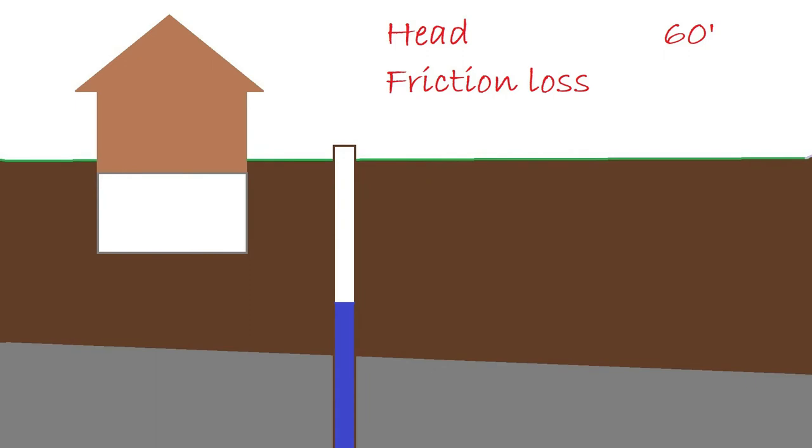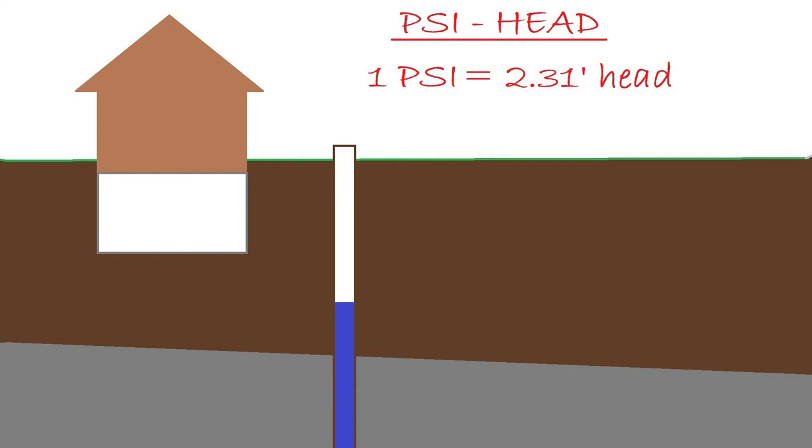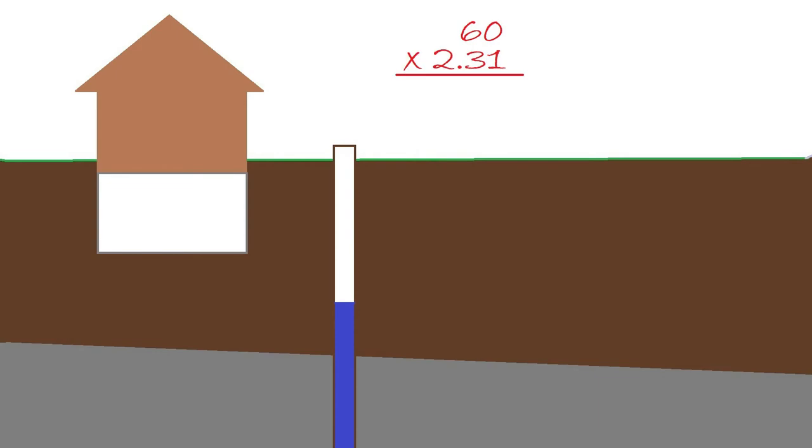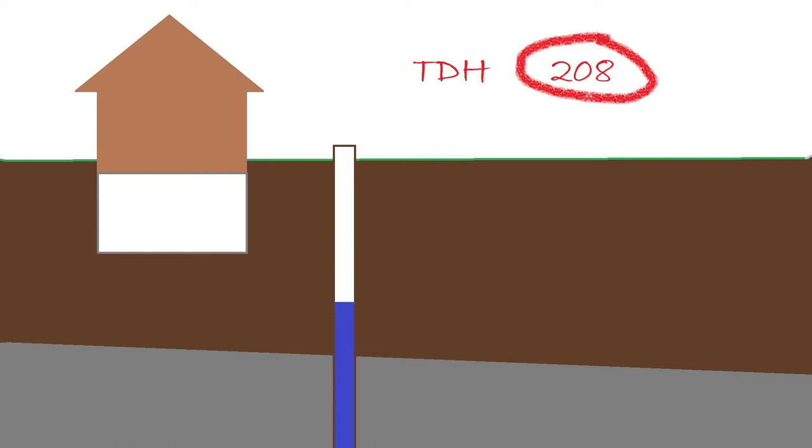Our friction loss is already in feet of head, which is 9.06. Now the system pressure we're going to run at 60 psi. That'll have to be converted to feet of head. So 1 psi equals 2.31 feet of head. All we have to do is multiply 60 by 2.31 and we get 138.6. When we add our head, friction loss, and pressure all together we get 207.66. We'll call that 208. That is our total dynamic head.